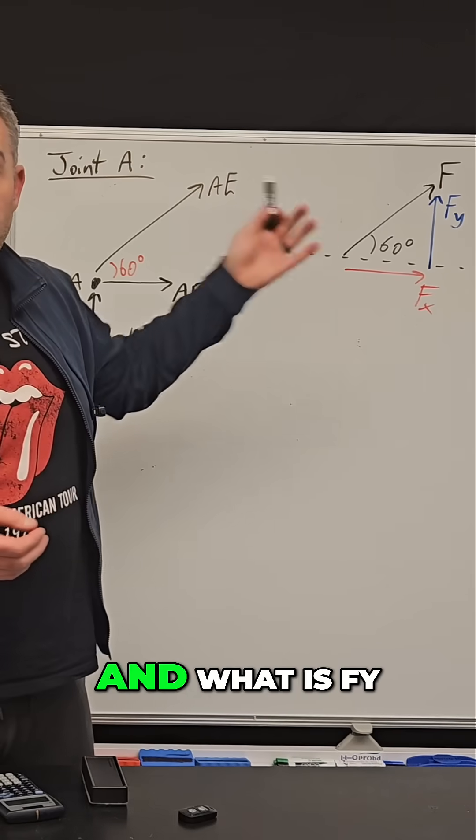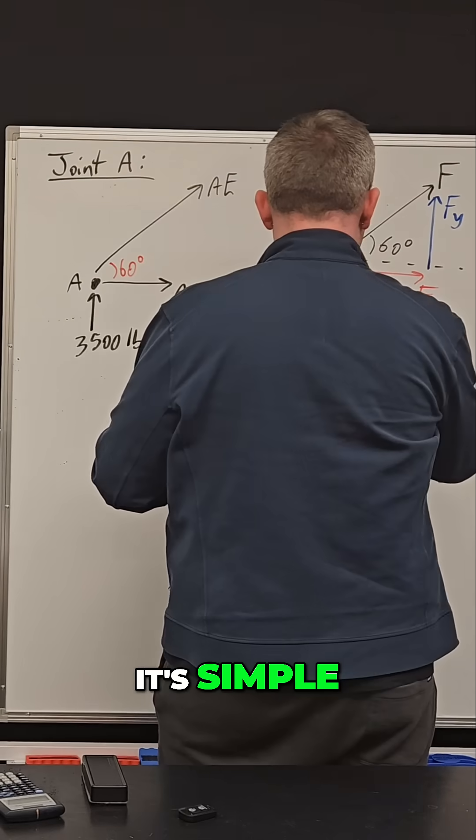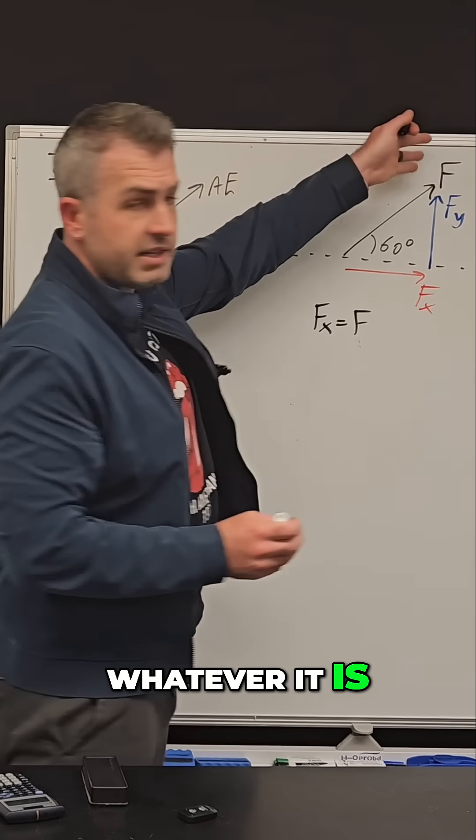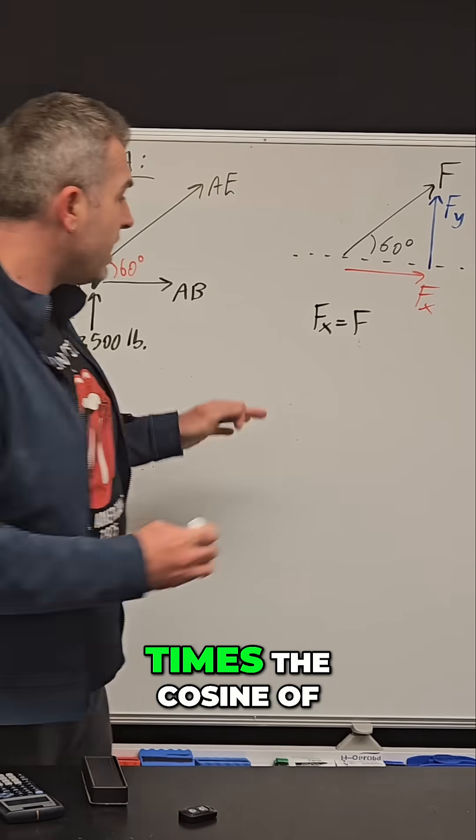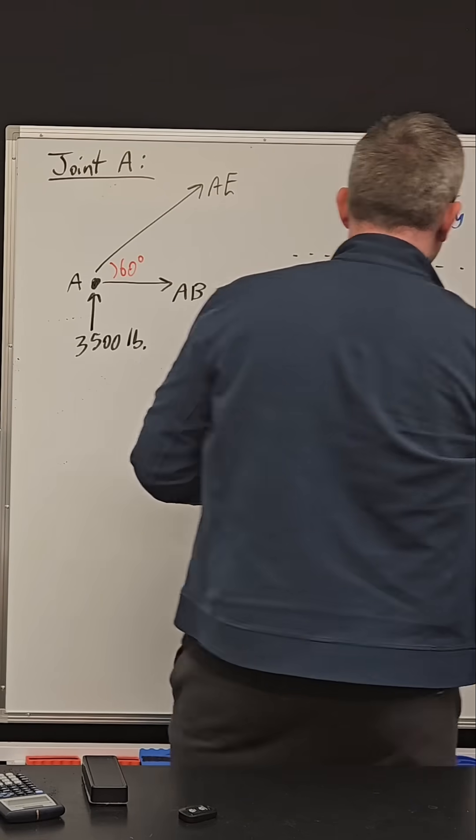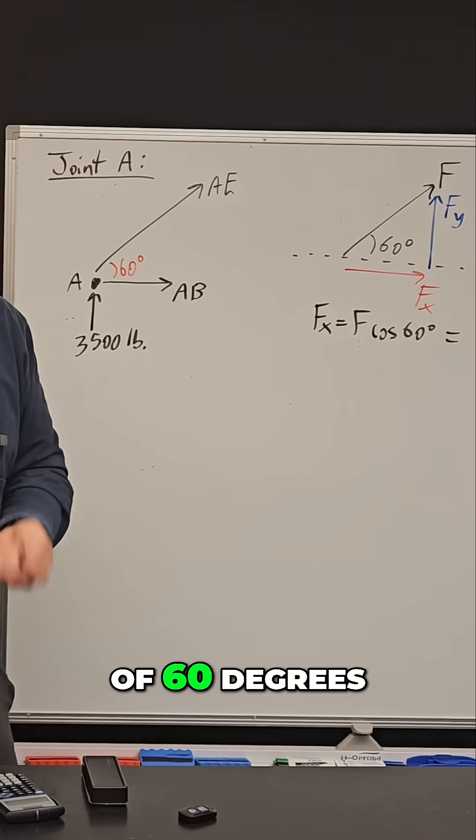So what is Fx and what is Fy? It's simple. Fx is this force, whatever it is, let's say 50 pounds, times the cosine of this angle. So times the cosine of 60 degrees.